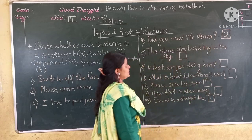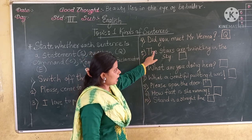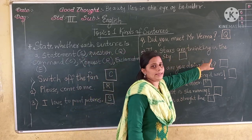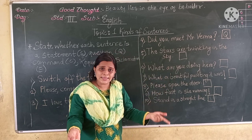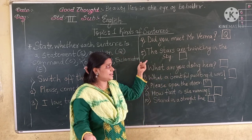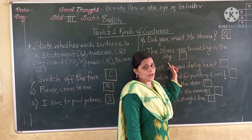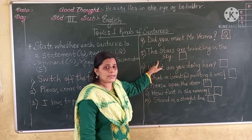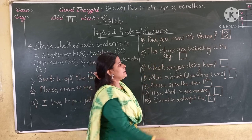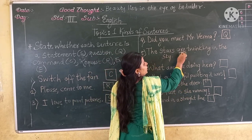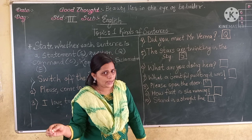Now the next sentence: The stars are twinkling in the sky. So this sentence tells you something — the stars are twinkling in the sky. So this is which kind of sentence? It is a statement. So what are you going to write here? S.